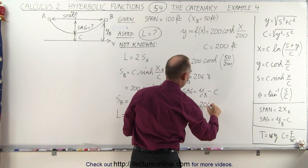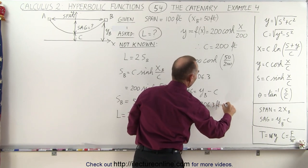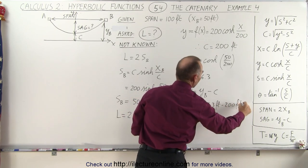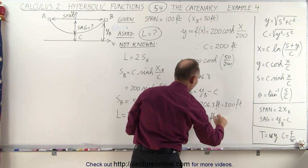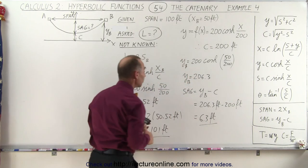So y sub b minus c, that would be 206.3 feet minus 200 feet, because we knew that c is equal to that. So we have a sag of 6.3 feet for a span of 100 feet.